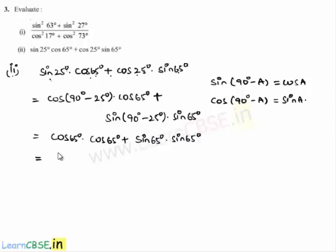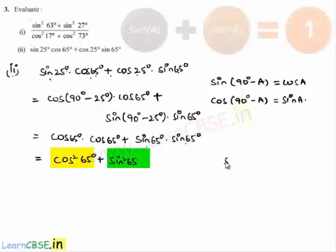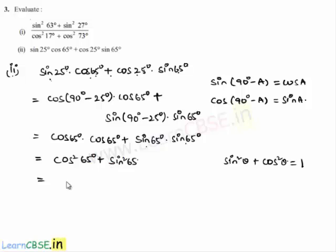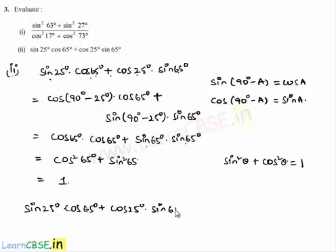That whole is equal to cos 65° into cos 65°, which is cos² 65°, plus sin 65° into sin 65°, which is sin² 65°. This is in the form of sin² θ + cos² θ, and we know that this value is equal to 1 from identity 1. So the whole value becomes 1. Therefore, sin 25° into cos 65° plus cos 25° into sin 65° is equal to 1.